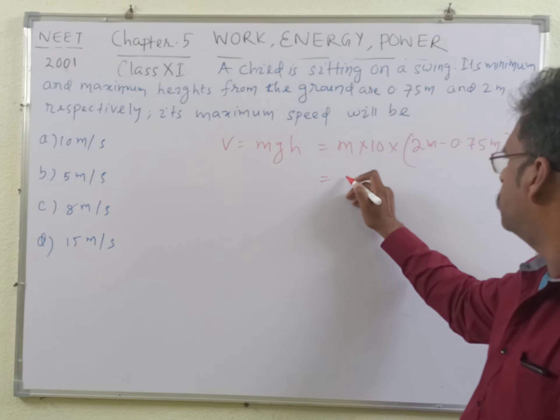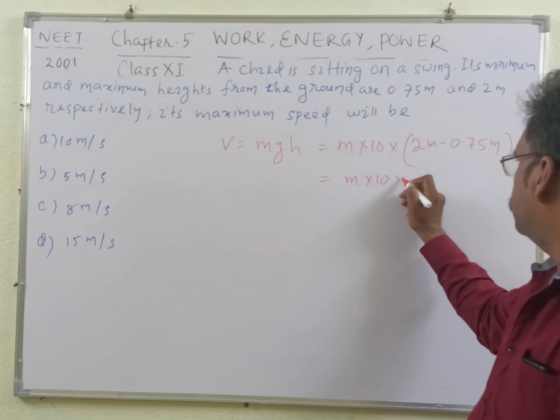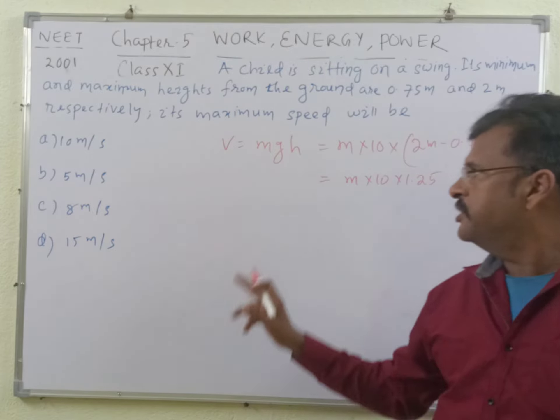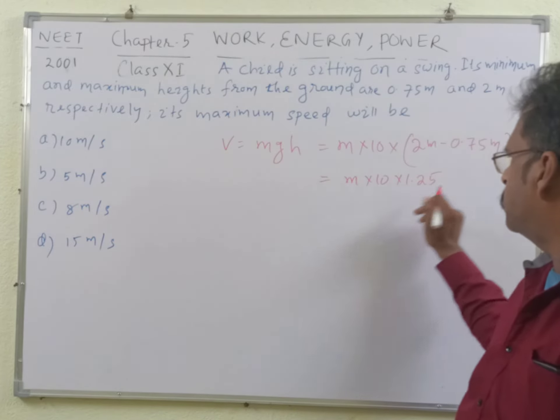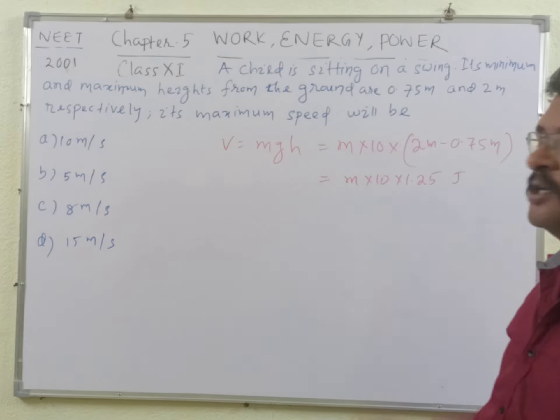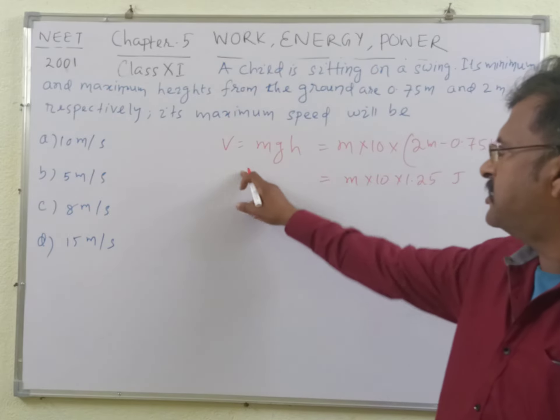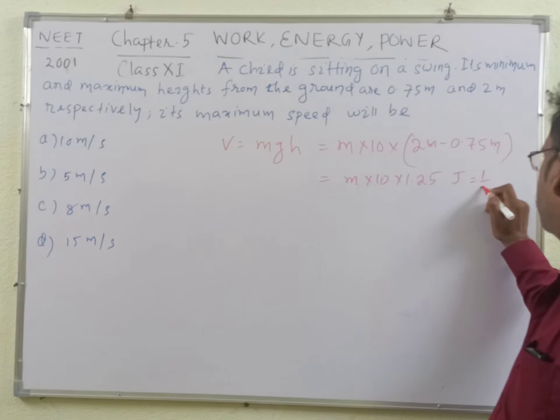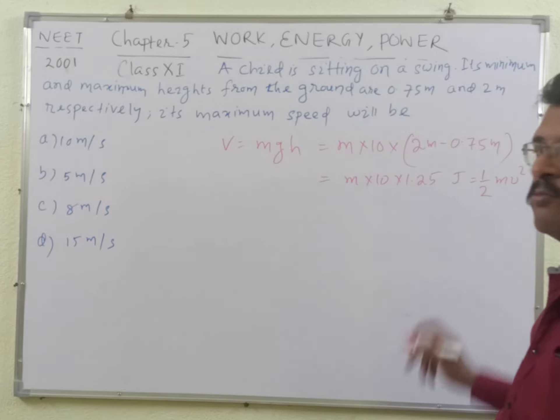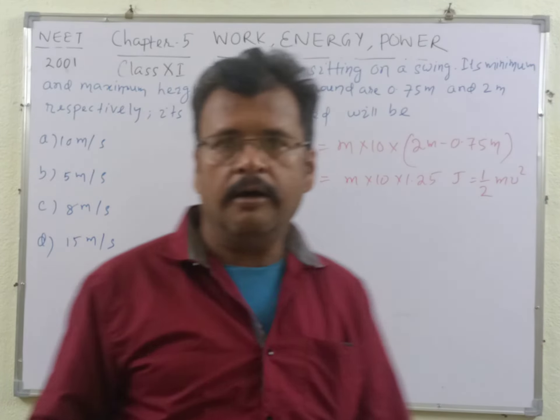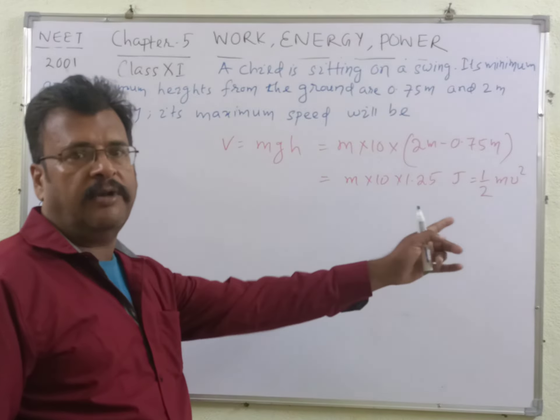So student, this becomes m into 10 into 1.25 meter. Okay student, so this is in joule because everything is in SI energy, student. And this is equal to half mv square, which is the formula for kinetic energy of a body where m is the mass.